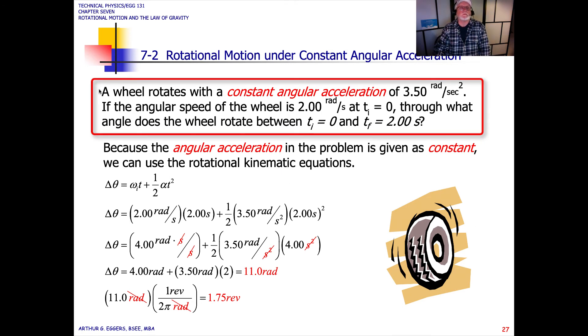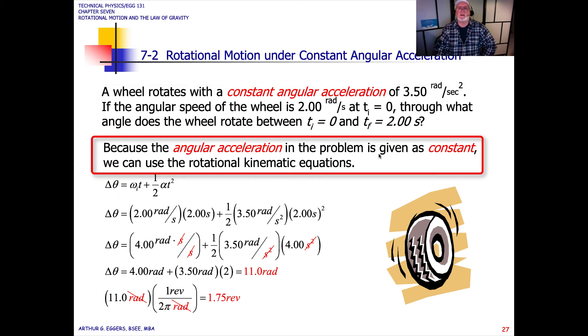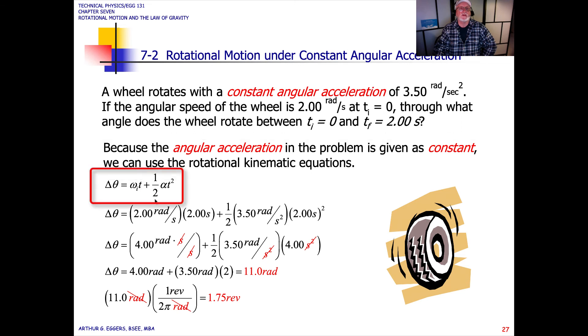Let's check another example. A wheel rotates with a constant angular acceleration of 3.5 radians per second squared. Whenever you have per second squared in the denominator, you know it's acceleration. If the angular speed of the wheel is 2 radians per second at initial time zero, through what angle does the wheel rotate between time zero and two seconds later? Because the angular acceleration is constant, we can use the rotational kinematic equations. Delta theta equals omega initial times time plus one-half the angular acceleration alpha times time squared.